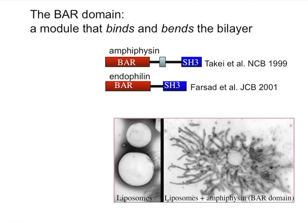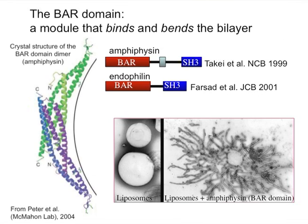Subsequently, a study by the McMahon lab reported the crystal structure of BAR domains and provided a potential explanation for the propensity to bind curved bilayer surfaces. They form an entirely alpha-helical antiparallel dimer with a curved banana-like shape. Collectively, these studies generated a lot of interest in protein-based mechanisms for the control of bilayer curvature.